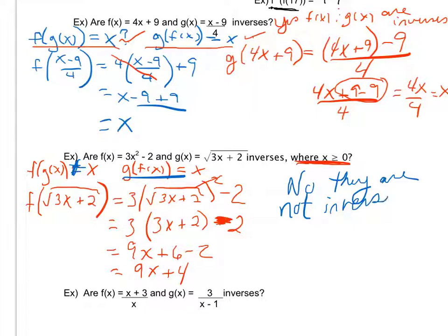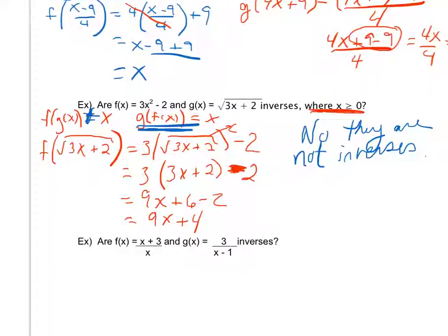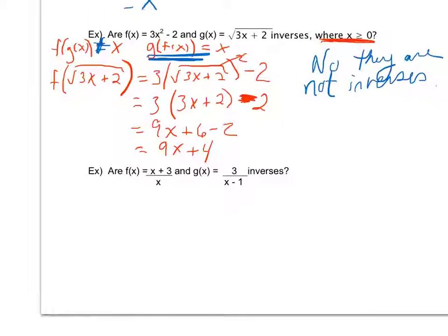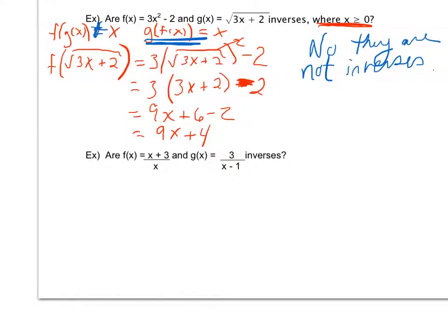It does not necessarily mean that the second composite wouldn't work, but they can only be inverses if both work. Since I've already determined they're not inverses, that's why I don't have to check the second one. Moving on to the third example, this would be a good one for you to try on your own to check your understanding of inverse functions and determining if two functions are inverses of one another.